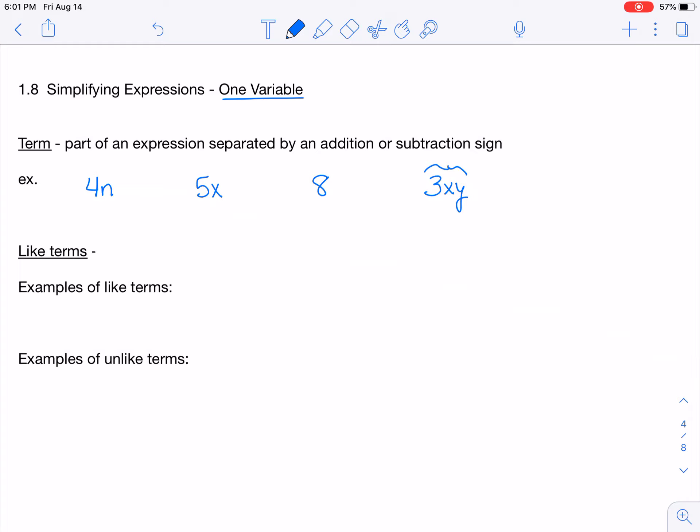Like terms, we need to have a definition for that. So like terms are terms that have the same variable combination. Some examples of like terms would be 4n and 7n. I used just an 'and' here to link those two. If it were in a problem or an expression that you're dealing with today, there would be a plus or a minus sign. Another example would be 3x and negative 2x. You can have terms that have negative signs. Those would be like terms.